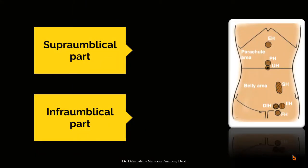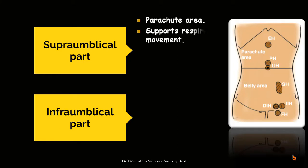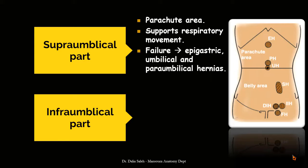Functionally, the anterior abdominal wall can be divided into two regions: the supraumbilical part and the infraumbilical part. The supraumbilical part is also called the parachute area. Because of the oblique arrangement of the muscle and aponeurotic fibers in the upper abdomen, this allows distensibility and expansibility, supporting respiratory movements. Failure in the support of the upper abdomen leads to hernias such as epigastric, umbilical, and paraumbilical hernias.